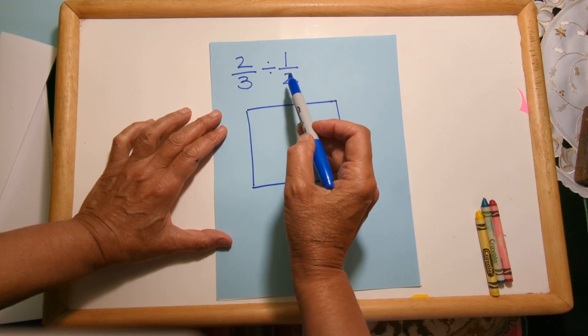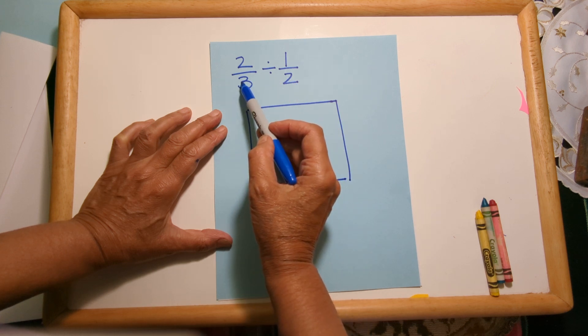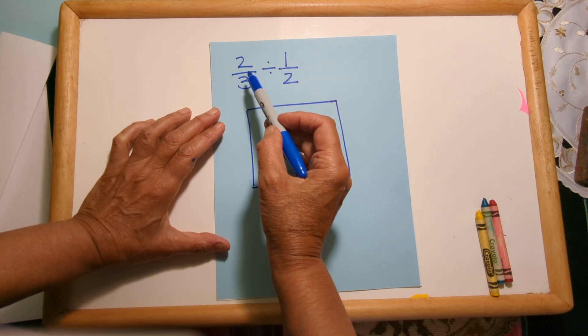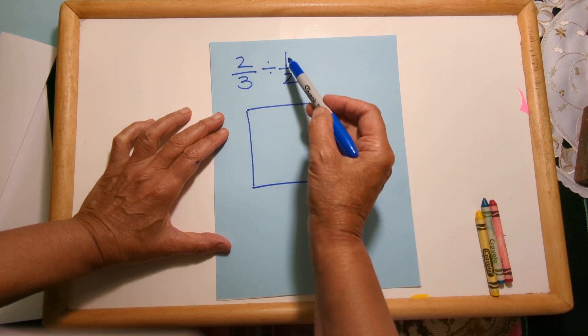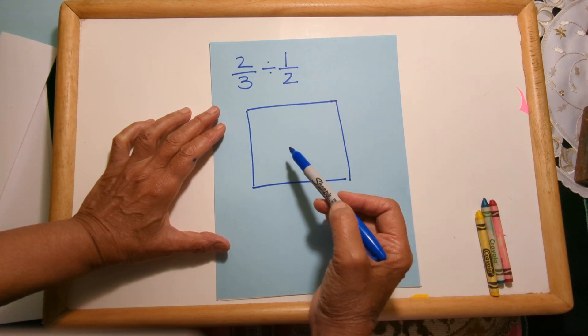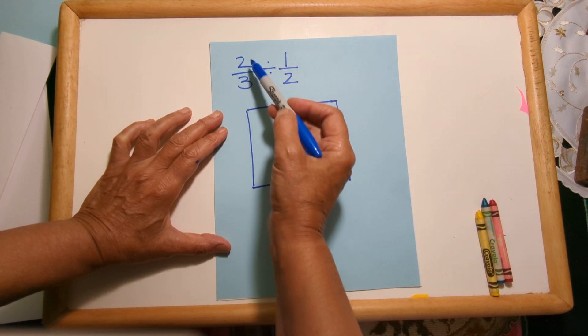Now it's asking me how many one-halves fit into two-thirds, and what these are also referring to is two-thirds of a whole and one-half of a whole. So how many one-halves of a whole fit into two-thirds of a whole?